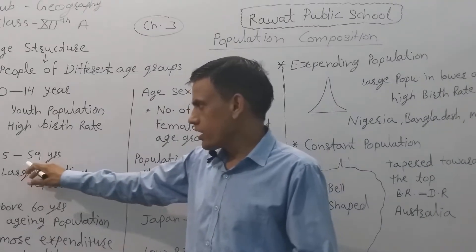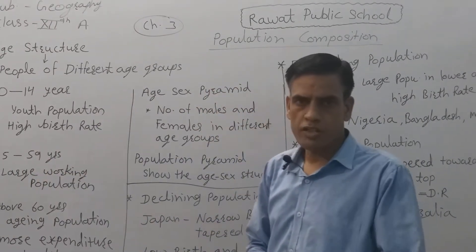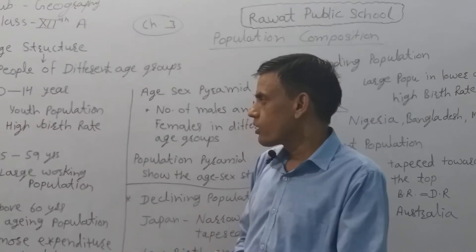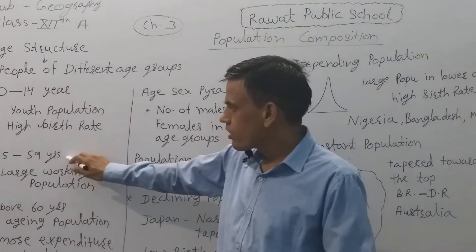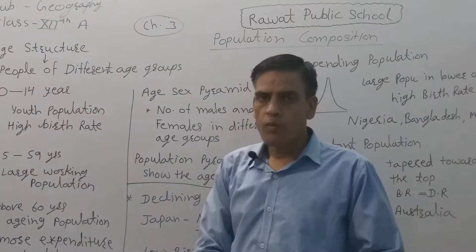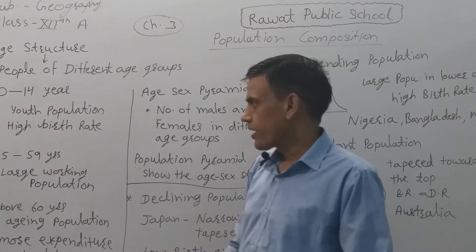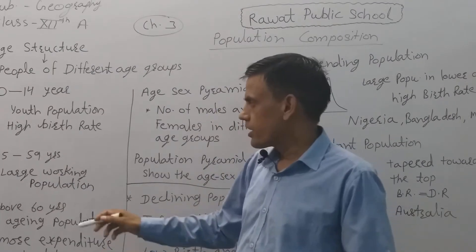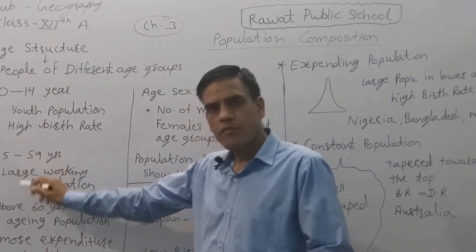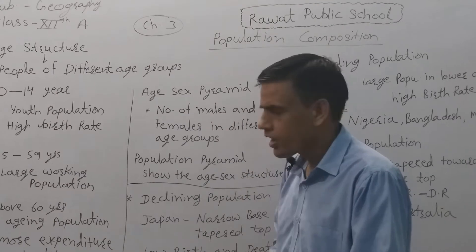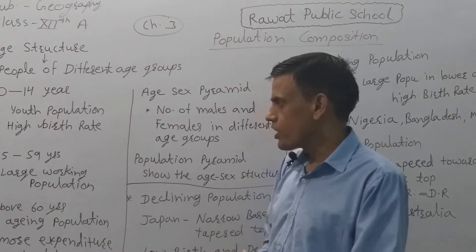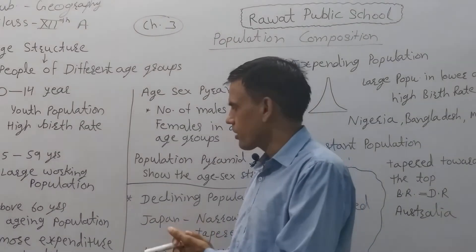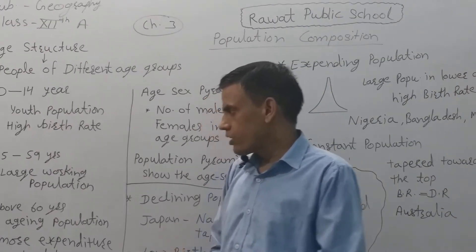The second category or second age structure is 15 years to 59 years. Between the age group of 15 to 59 years is the large working population. This structure is called the working population. If any country or area has a large population between 15 and 59 years, it means there are a large number of people in the working age.